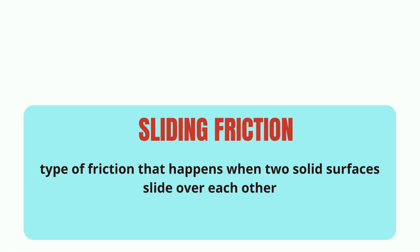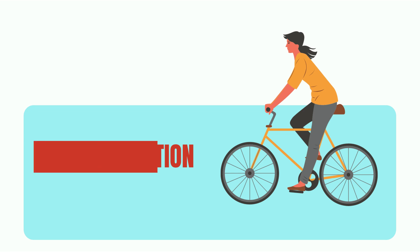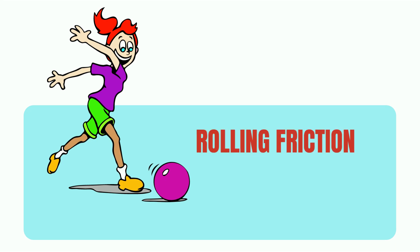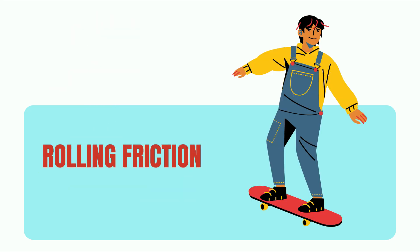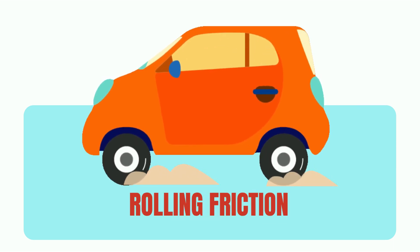Sliding friction is a type of friction that happens when two solid surfaces slide over each other. When you ride a bike and press the brakes, the bike stops because of sliding friction. Rolling friction acts on a rolling object and the surface it contacts. The bowling ball rolling on the alley, the wheels of a skateboard, and the wheels of a moving car all have rolling friction.